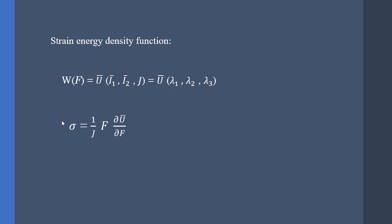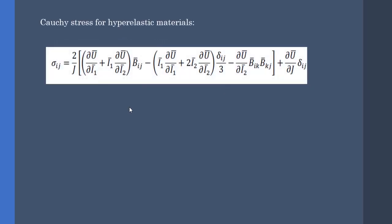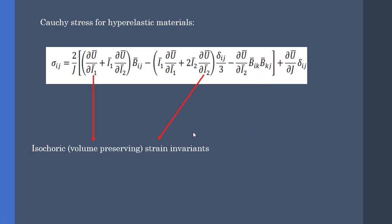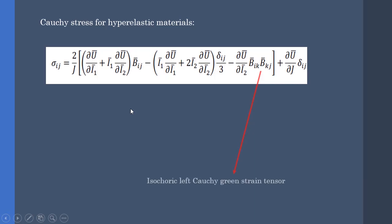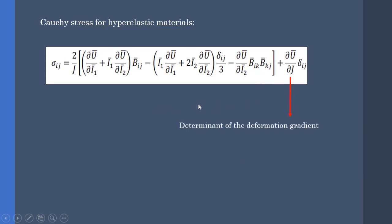The Cauchy stress tensor can be derived using the following formula. And if we expand that formula, we get to this relation in which B̄_ik B̄_kj is the isochoric left Cauchy-Green strain tensor, Ī₁ and Ī₂ are the isochoric strain invariants, and J is the determinant of the deformation gradient tensor.